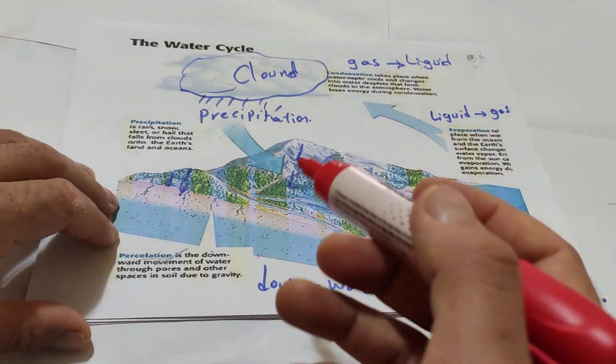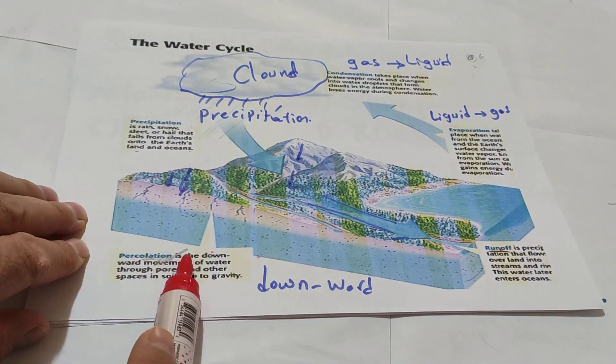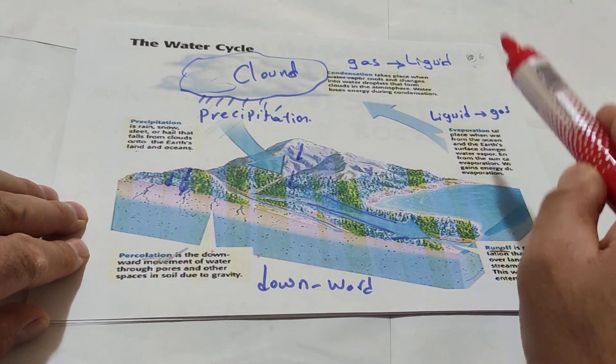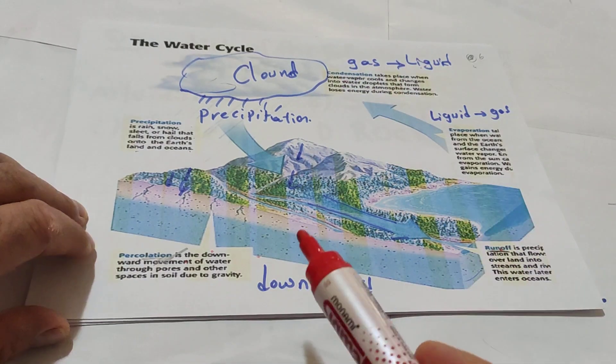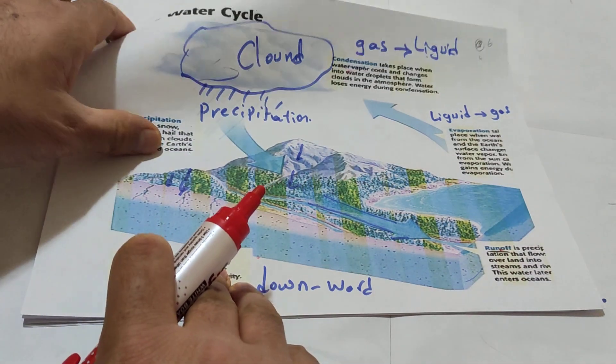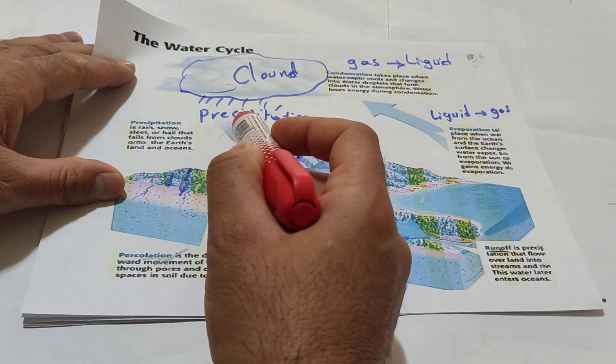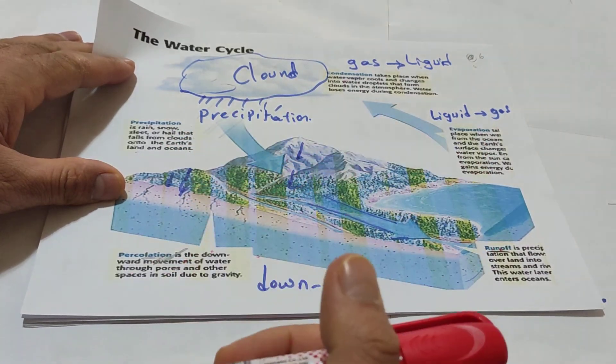Even here we can check the example: precipitation, percolation, evaporation, condensation, run off. So they are part of the water cycle. What about precipitation? Precipitation: rain, snow, sleet, from cloud to come to surface of earth.